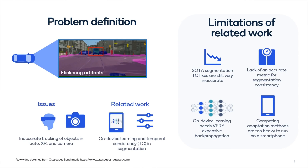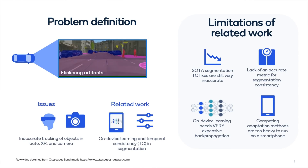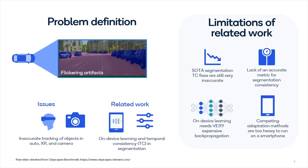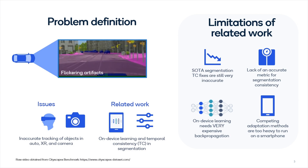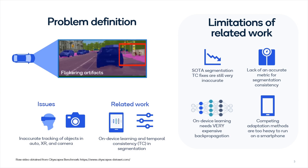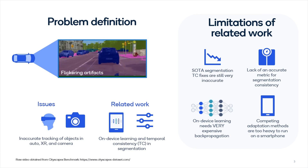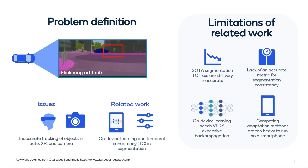However, existing segmentation solutions often have flickering artifacts and lack temporal consistency between video frames. Related work addressing these challenges still has limitations, including inaccurate temporal consistency between frames, the lack of an accurate metric to model consistency, and difficulty deploying real-time on smartphones.